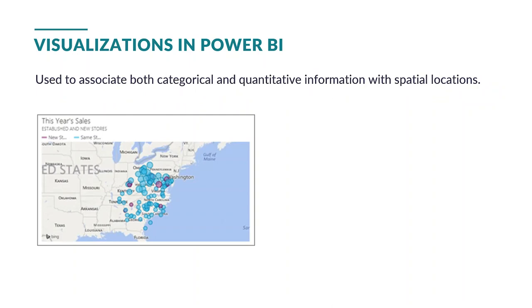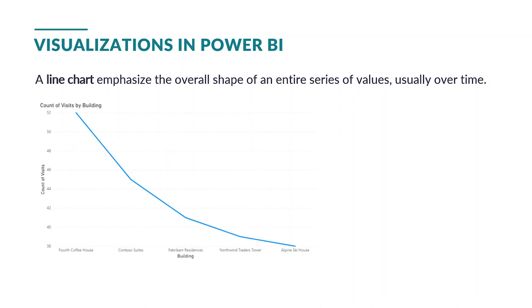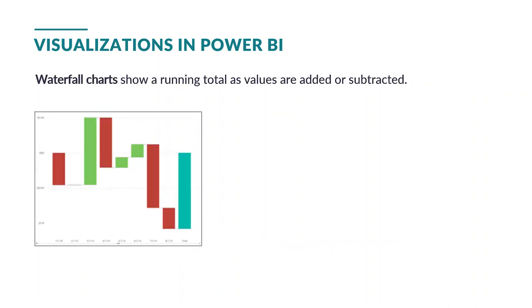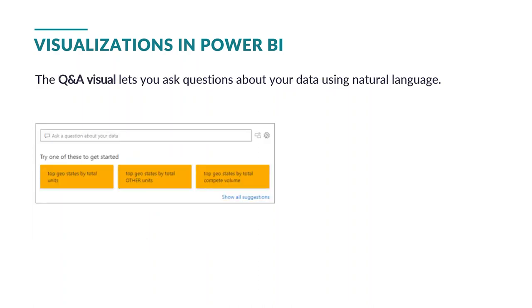We also have maps. They're used to associate both categorical and quantitative information with spatial locations. If you have data that is related to a specific location, a zip code, a city, or a country, you can actually display those in a map. This is a normal line graph — it emphasizes the overall shape of the entire series of values, usually over time. We also have waterfall charts. Waterfall charts show a running total as values are added or subtracted. Lastly, we do have the Q&A visual, which lets you ask questions about your data in natural language.